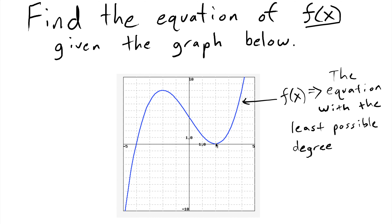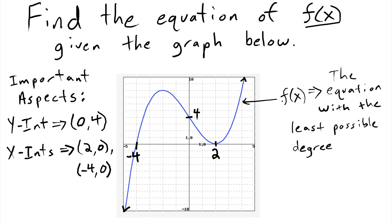When you're trying to determine the equation of a function, important parts of this graph include the x-intercepts. Also, it's going to be important to note that the y-intercept occurs where y equals four. In order to figure out what the degree of our polynomial is going to be, we need to look at the number of turning points. For this function, there are two of those.